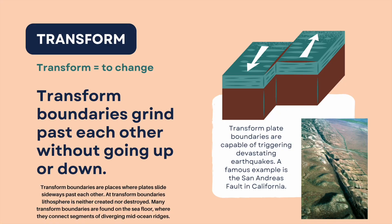Transform boundaries are where plates grind past each other without going up or down — they slide sideways past each other. At transform boundaries, lithosphere is neither created nor destroyed. Many transform boundaries are found on the seafloor, connecting segments of diverging mid-ocean ridges. Transform plate boundaries are capable of triggering devastating earthquakes. A famous example is the San Andreas Fault in California.